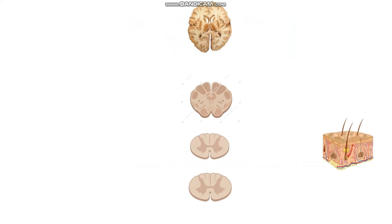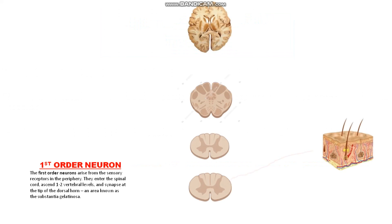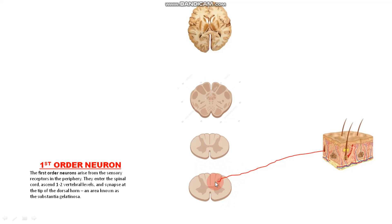The first order neuron carries the sensory signals of crude touch, pressure, pain, and temperature from the skin and travels to the spinal cord, where it synapses in the area known as the substantia gelatinosa at the dorsal horn of the spinal cord.